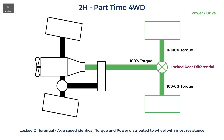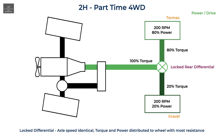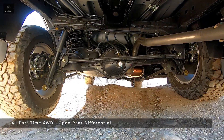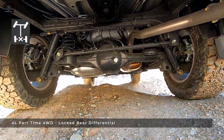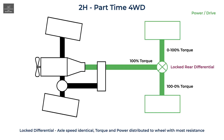A locked differential can distribute up to 100 percent of the torque to either wheel, allowing maximum torque and power to be transmitted at any time to either wheel depending on surface conditions and where the torque is actually needed. This could mean the difference between moving or getting stuck on low traction surfaces. However, because a locked differential locks the axles and therefore wheel speeds together, it no longer acts as a differential and shouldn't be used on high traction surfaces, as it doesn't allow for differences in left-right wheel speed.